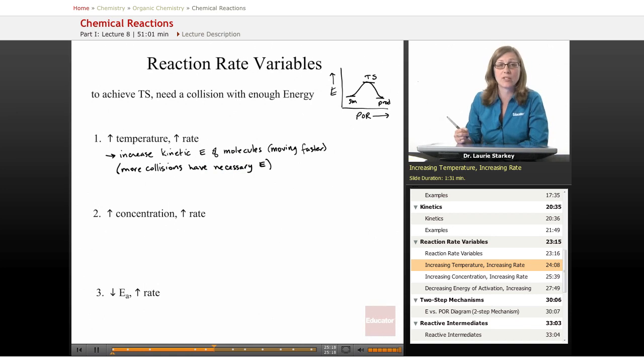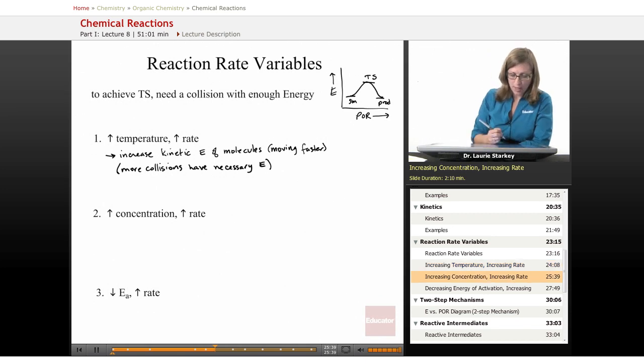This is why certain reactions like food spoiling are going to happen faster at room temperature or faster in hot foods than in cold foods. That's why we store our food in the refrigerator. That's why maybe you store your batteries in the refrigerator or your medicines in the refrigerator. The colder you keep them, the slower all the reactions that might happen for degradation.